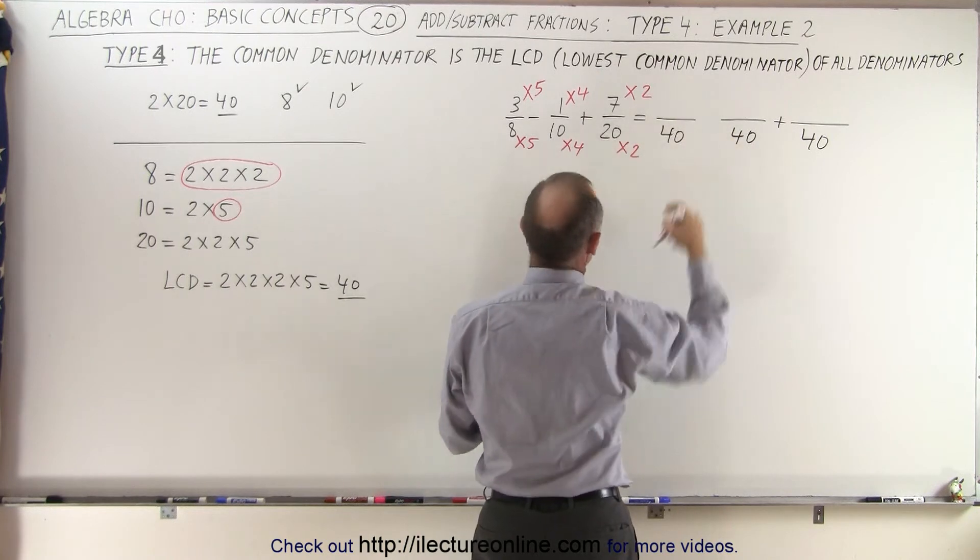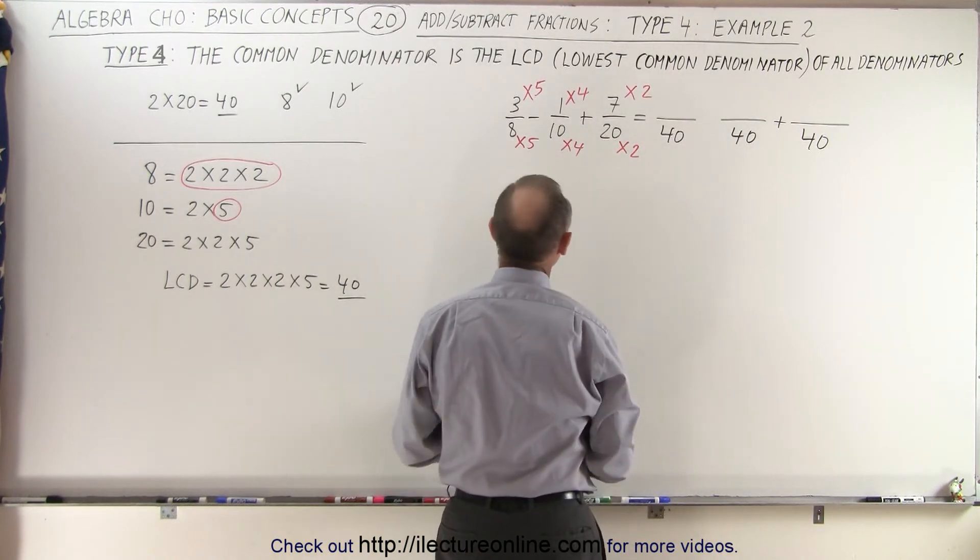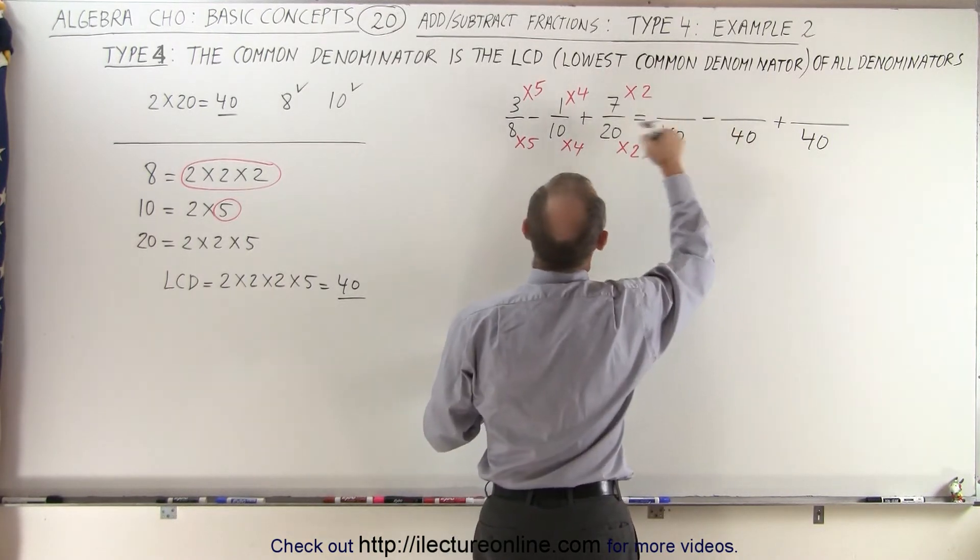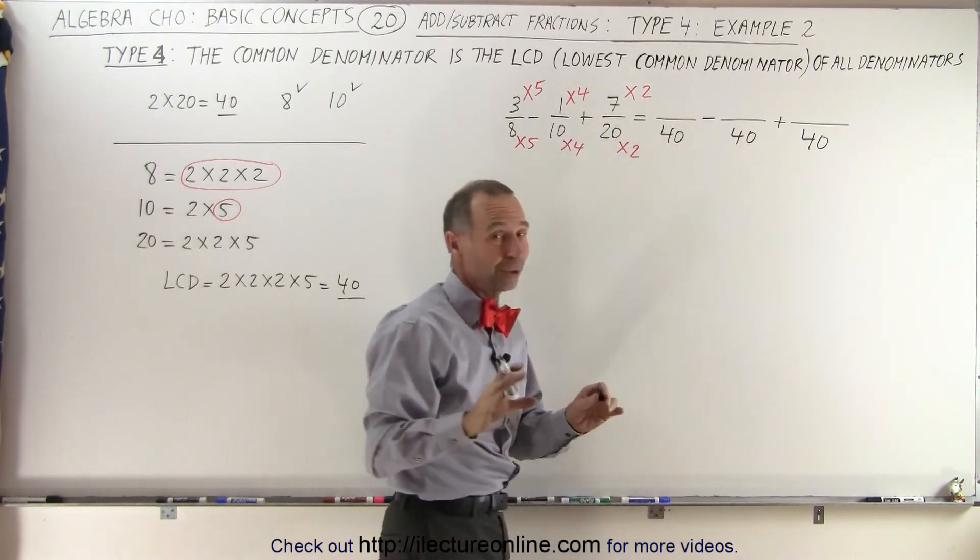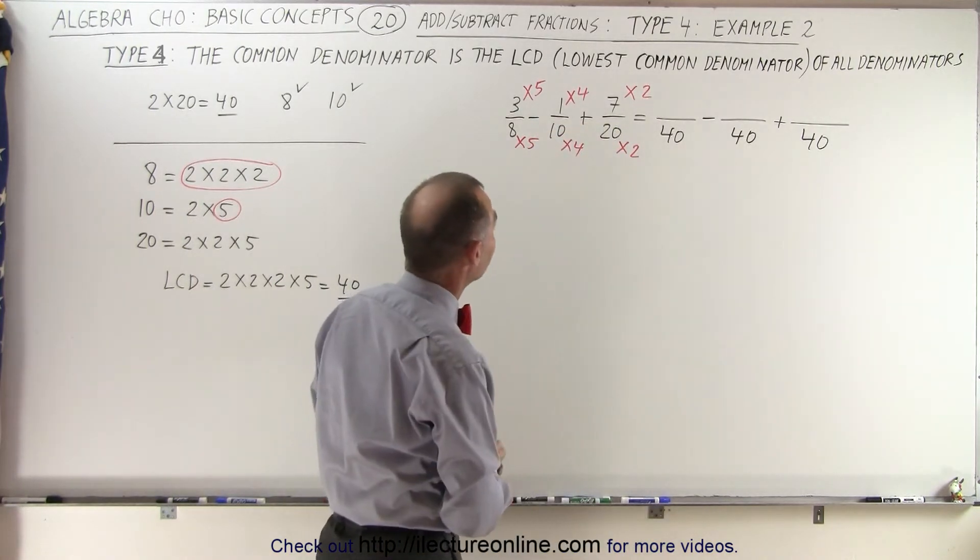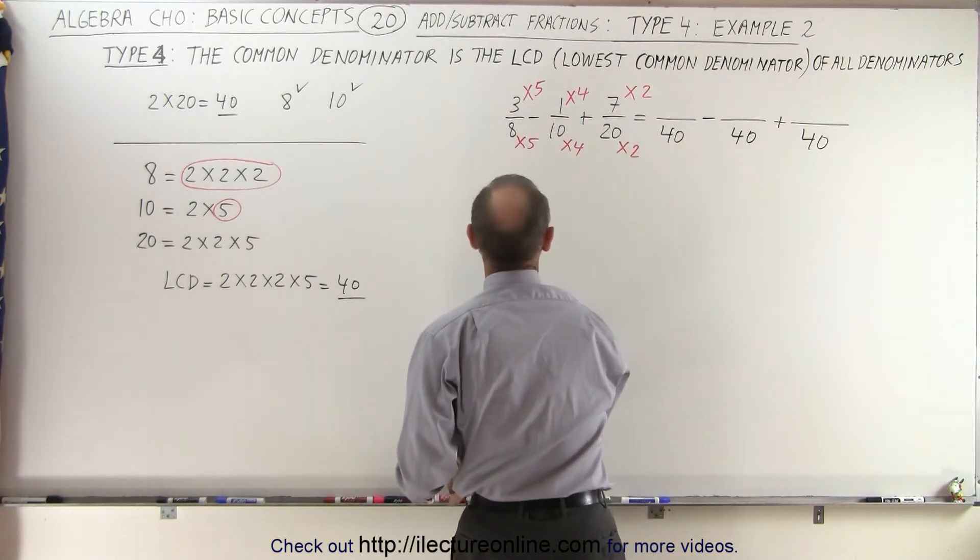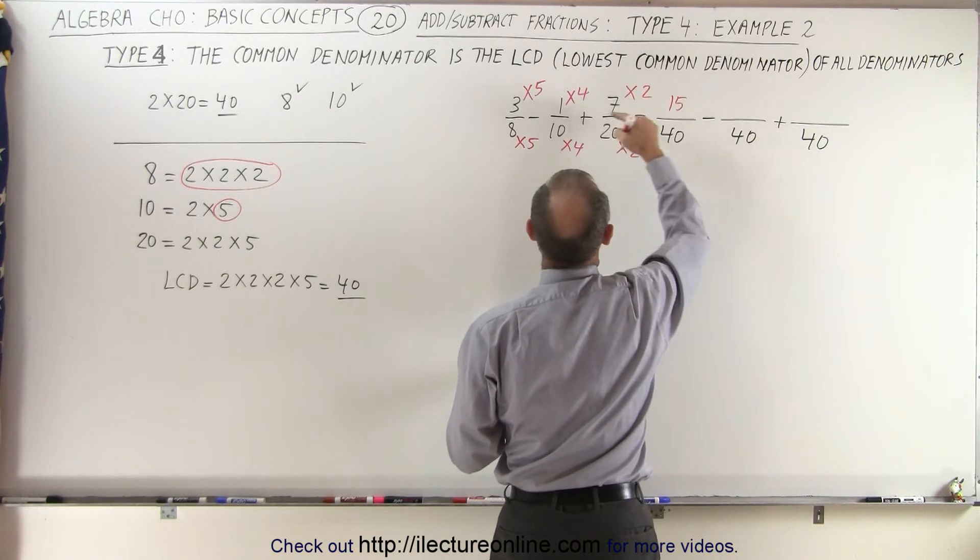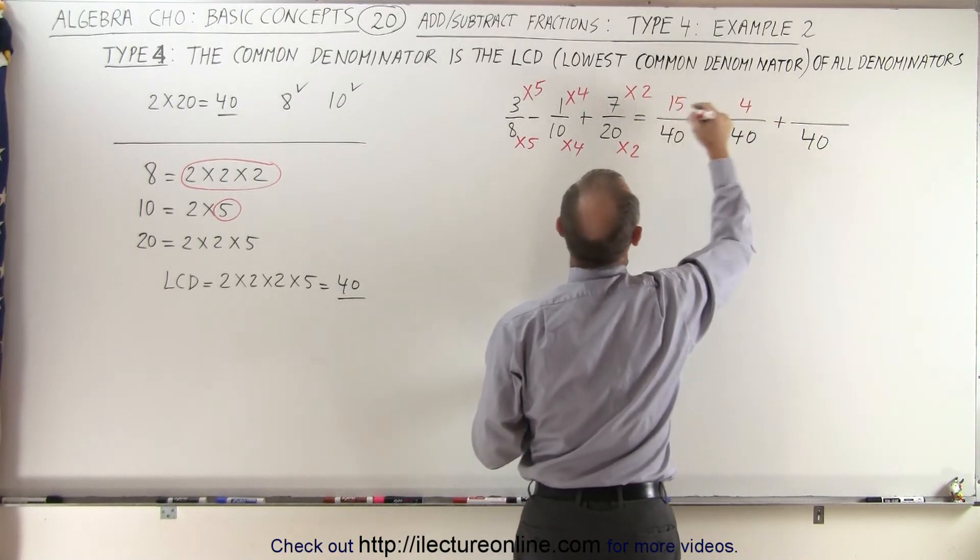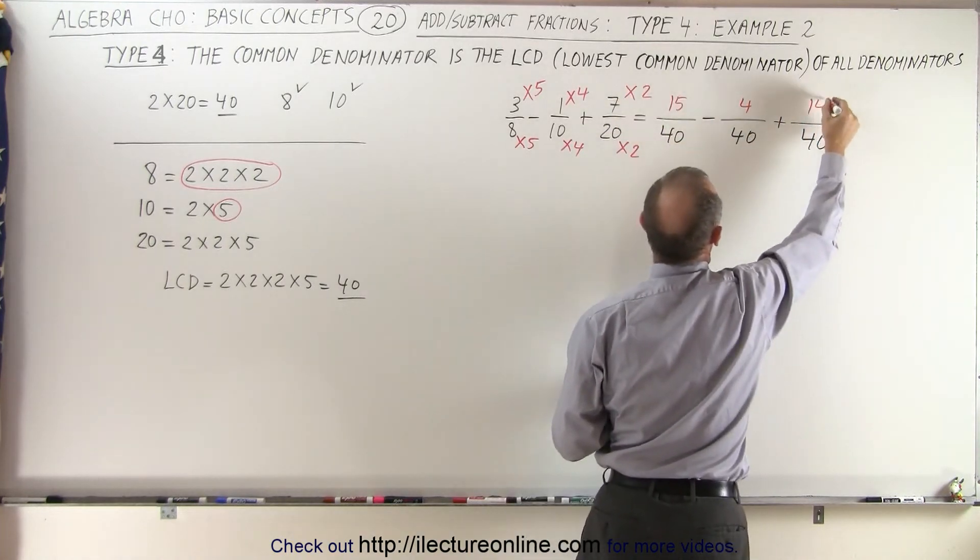And by the way, this should not be a minus. This should be a plus. This should be a minus because I had a minus there. So good thing that I caught my error. So 3 times 5, it gives us a new numerator of 15. 1 times 4 gives us 4, and 7 times 2 gives us 14.